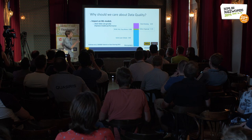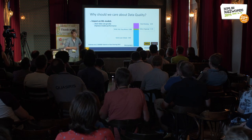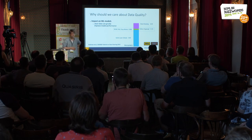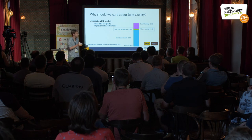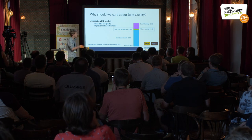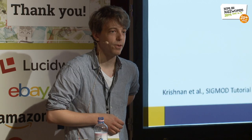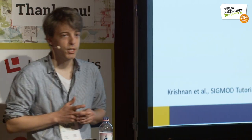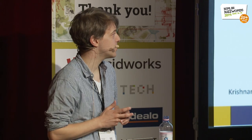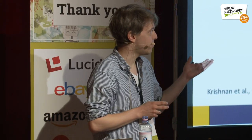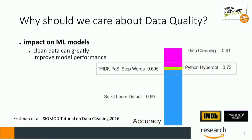What they did is they took an IMDB movie review sentiment dataset and tried to predict the sentiment using a standard out-of-the-box scikit-learn pipeline with stop words removal and hyperparameter optimization on top. What they found is that they received much better predictive performance after they cleaned up their data. So data quality can have an impact on ML models.